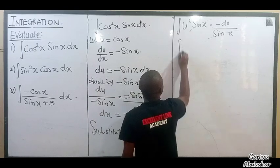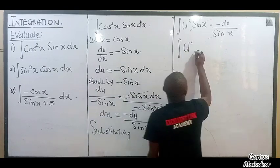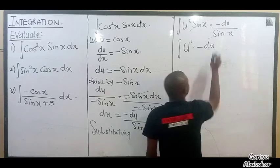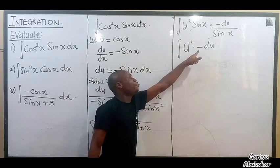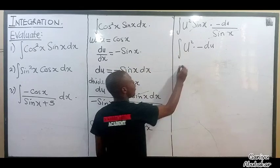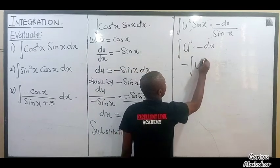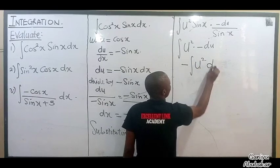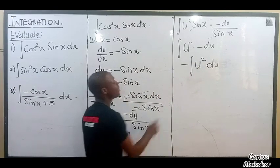So I put the integral, u squared, dot minus du. That becomes minus the integral of u squared du. If I integrate u squared using the power rule of integration, I will have the result with u raised to 2 plus 1, all over 2 plus 1.